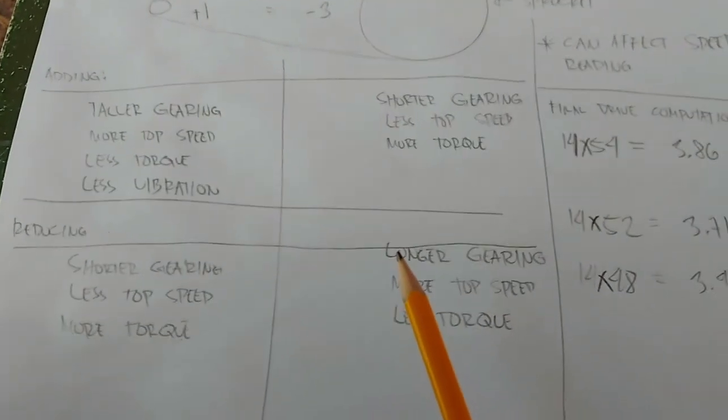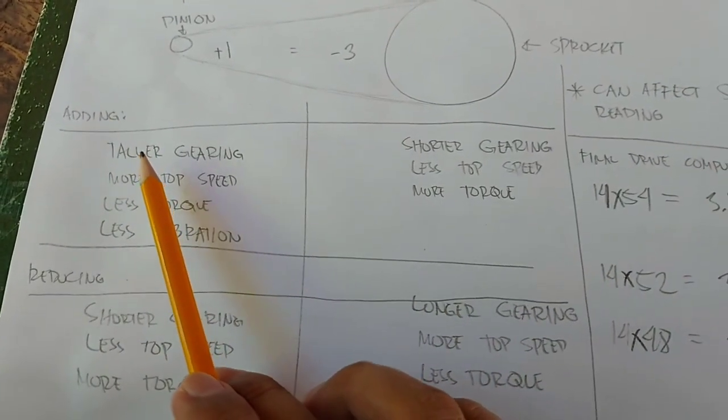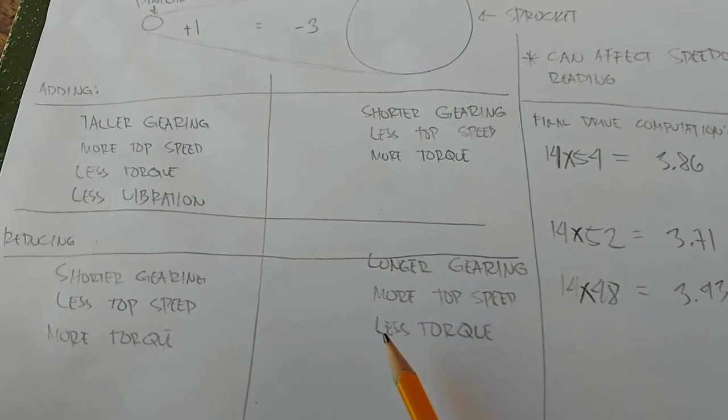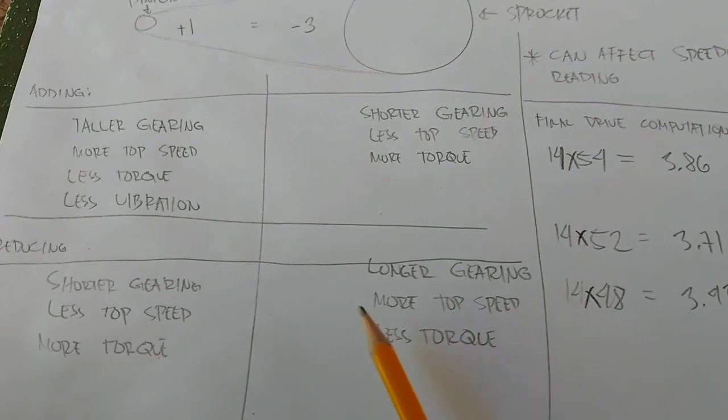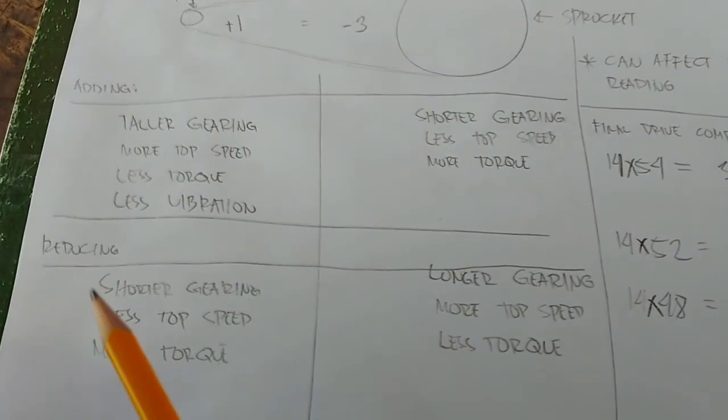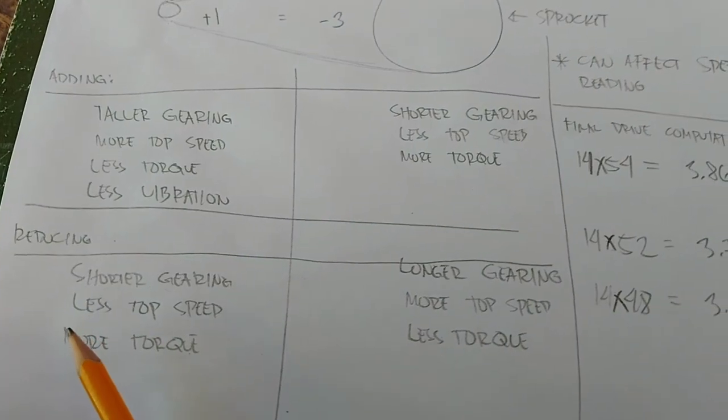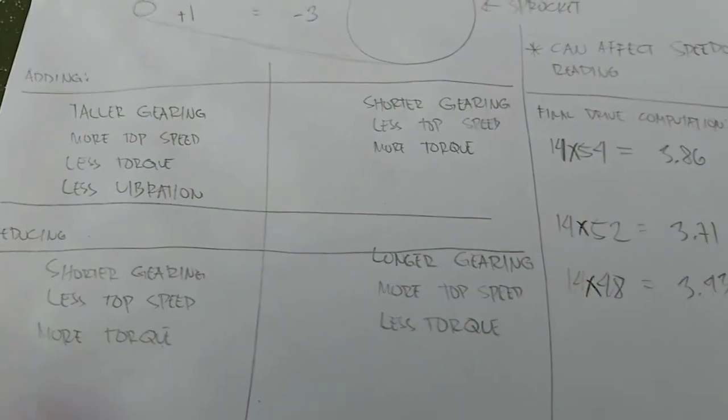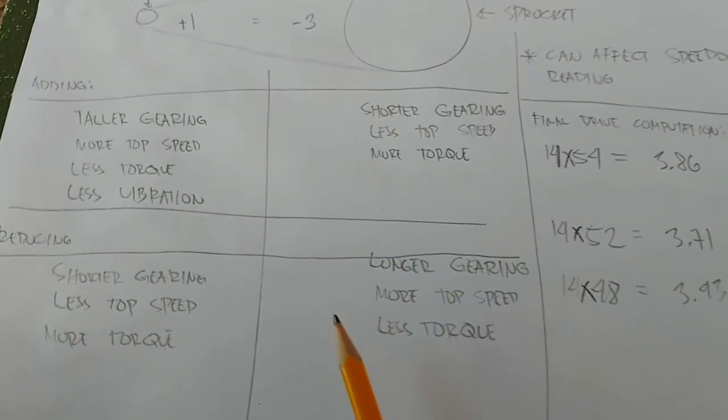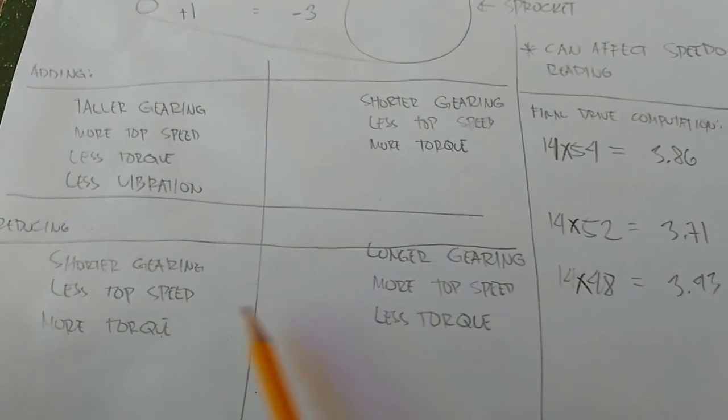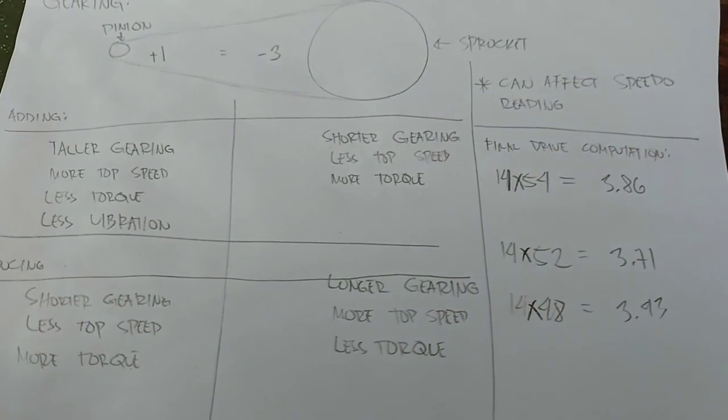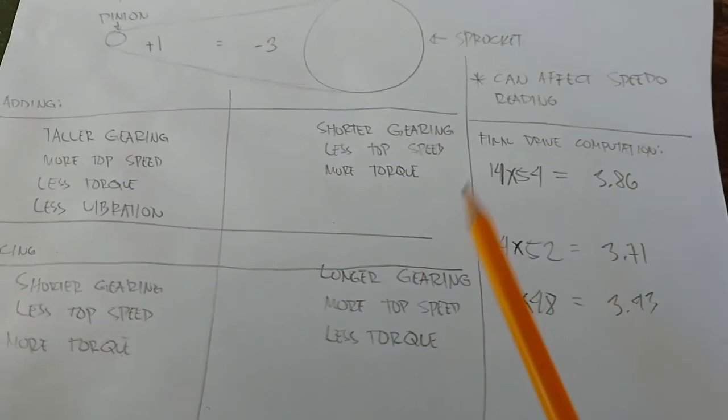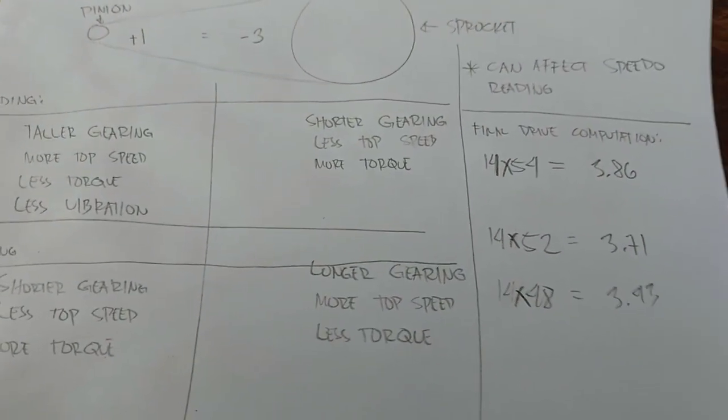To make matters simple, if you add gear to the pinion or remove teeth from the sprocket, same effect. If you remove teeth from the pinion or add teeth to the sprocket, same effect as well. Also, bear in mind that if the ratio is too short, the speedo will misread. If the ratio is too tall, of course, the speedo will also misread.